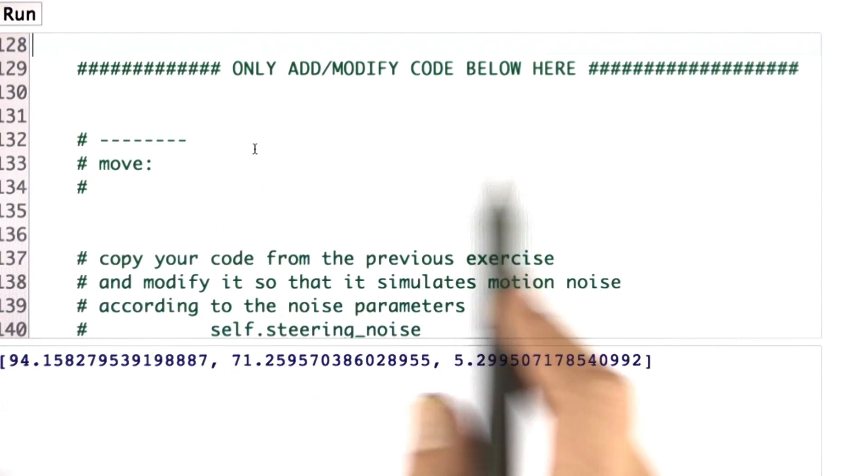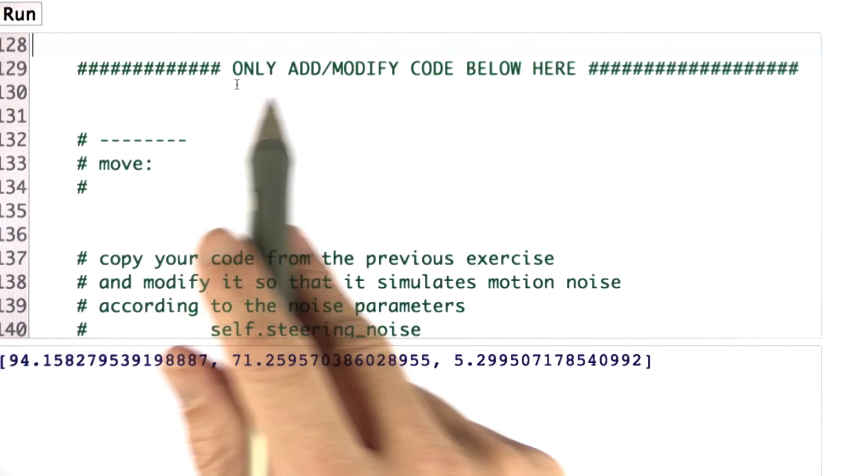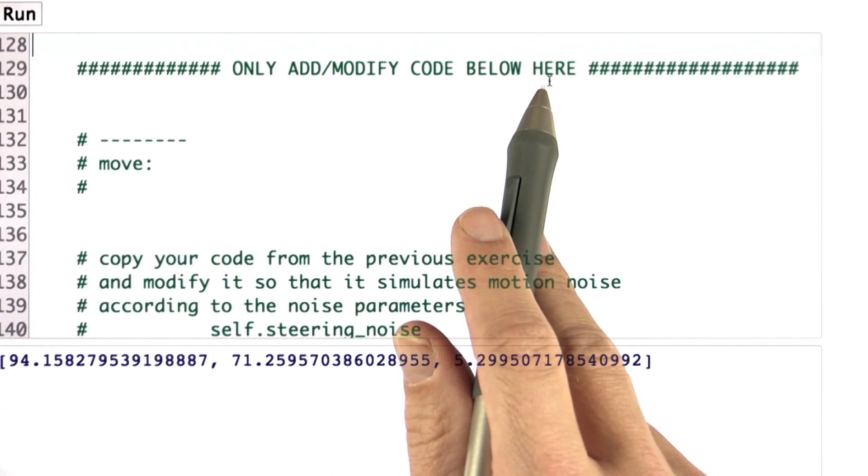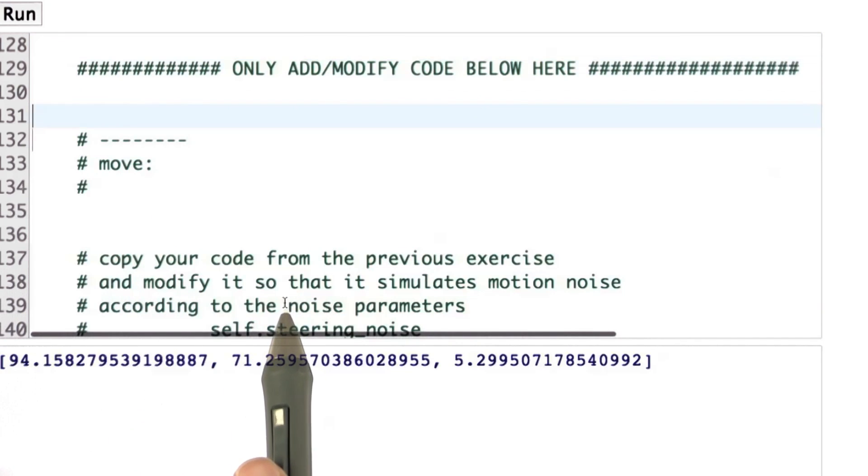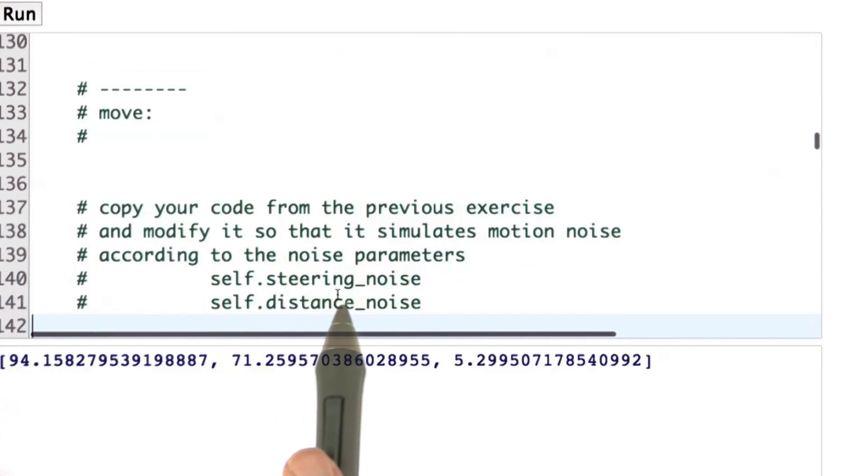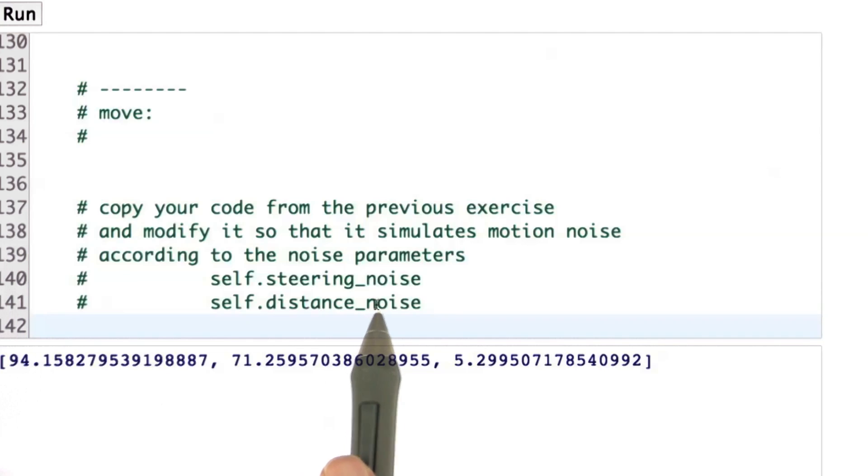So what you have to do is you have to find the part in the code that says only add and modify code below here. You have to copy over your move function and then work in, as it says in the instructions, the steering noise and the distance noise. That is Gaussian noise. I hope you know how to do this.